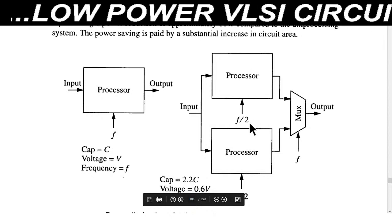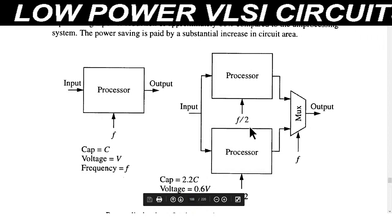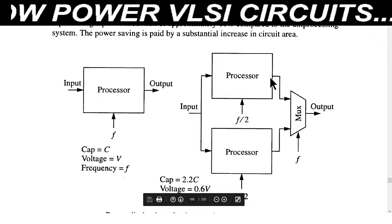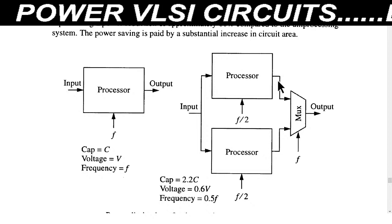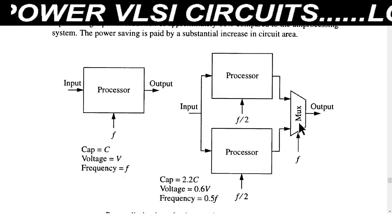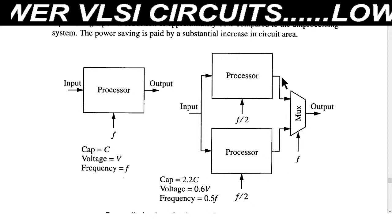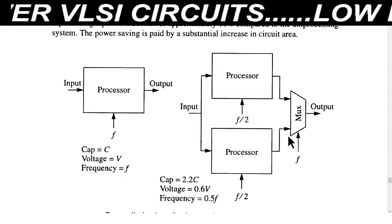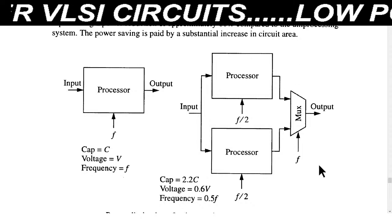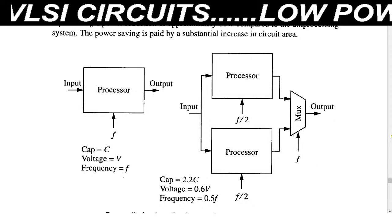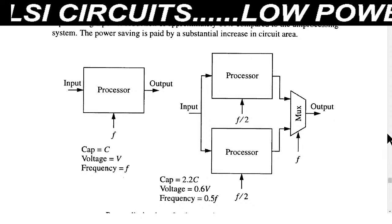So these two processors operate at half frequency. These processors provide two different outputs, and after providing these outputs to a multiplexer, we get a single output from the system.